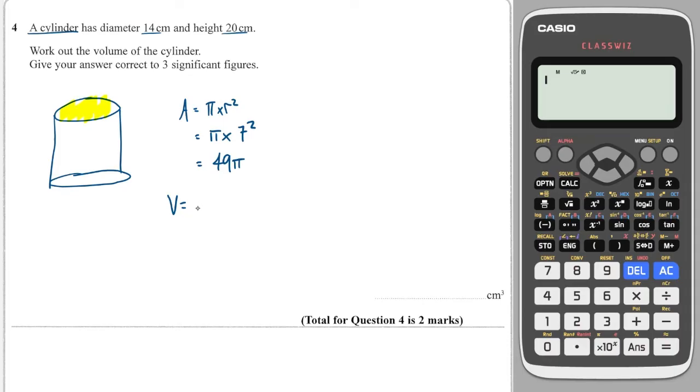The volume of the prism is always the cross-sectional area, which is 49π, multiplied by how far that area is pushed through the shape. In this case, it is the height that the cross-sectional area is being pushed through and that is 20. So I do 49 multiplied by π, multiplied by 20, and that gives me 3079, which is approximately to three significant figures, 3080.